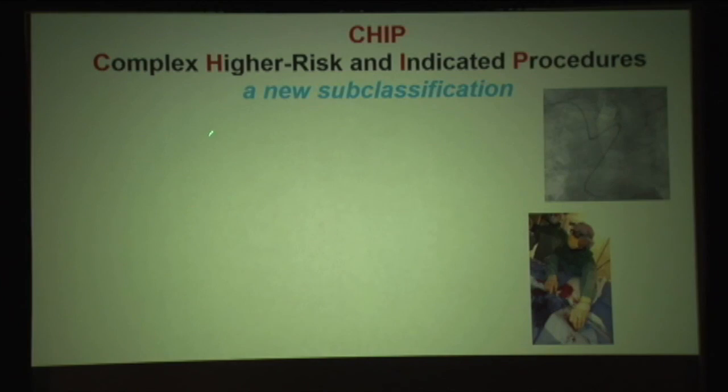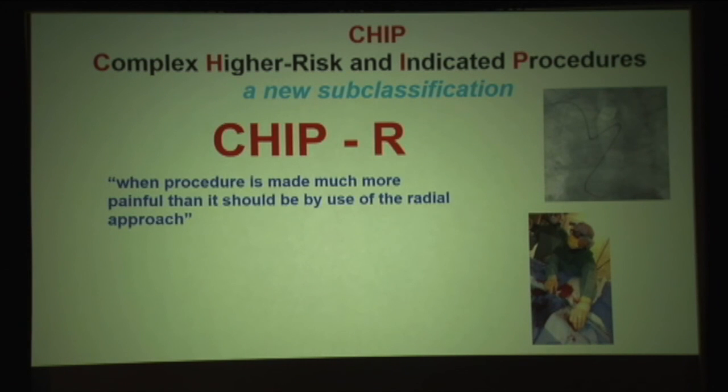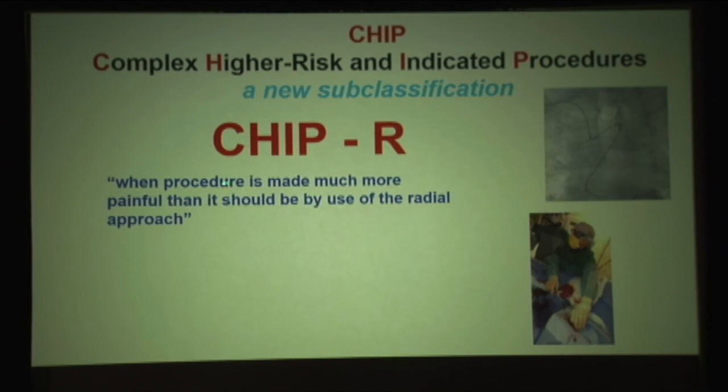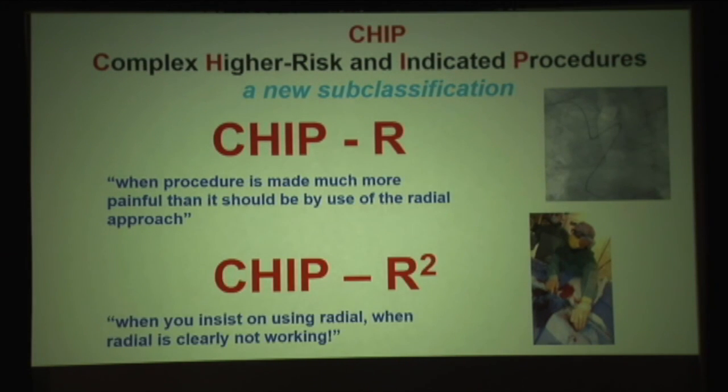Based on all this data, we had a consensus meeting in the cath lab a few days ago and decided to make a new classification called CHIP-R — that's the procedure made much more painful than it should be by use of the radial approach. And there's more: CHIP-R squared, when you insist on using radial even when it's clearly not working. So do you want to be a CHIP-R-squared operator? It's up to you.